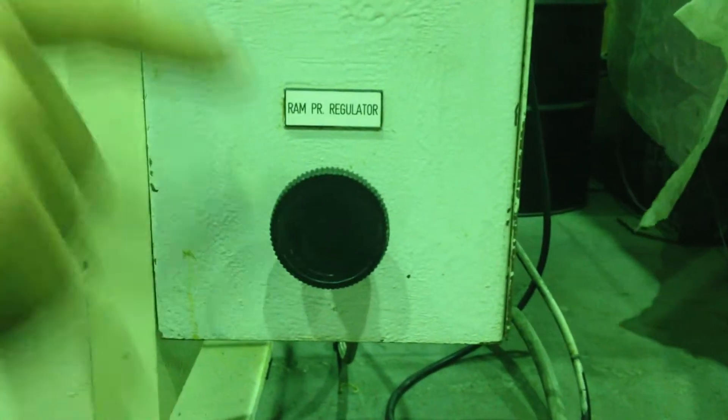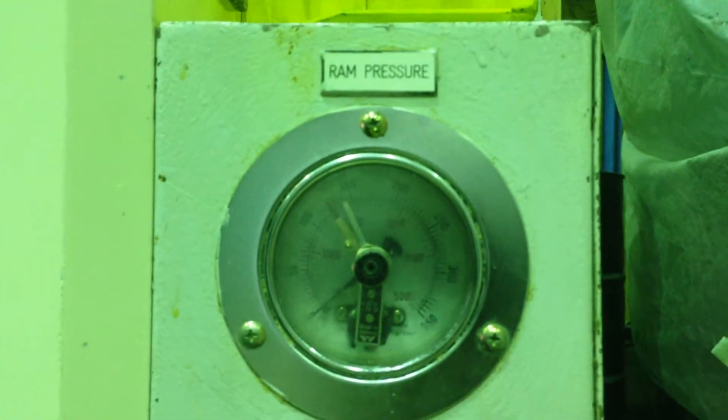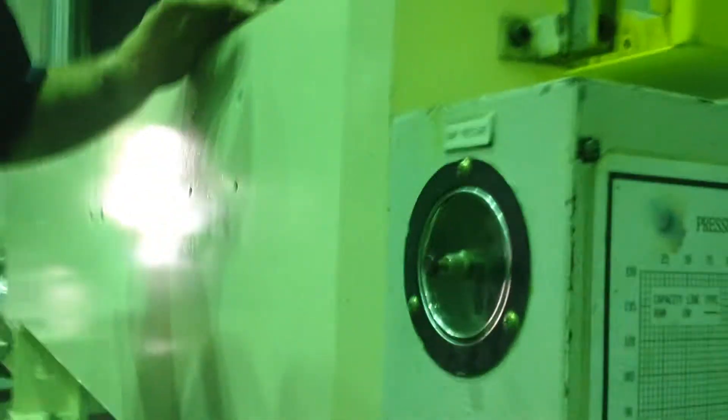Alright, down here is your tonnage control. Turn it in for more tonnage, turn it out for less tonnage. That's your gauge which tells you what you're reaching. Got a chart on the side that corresponds with the gauge.